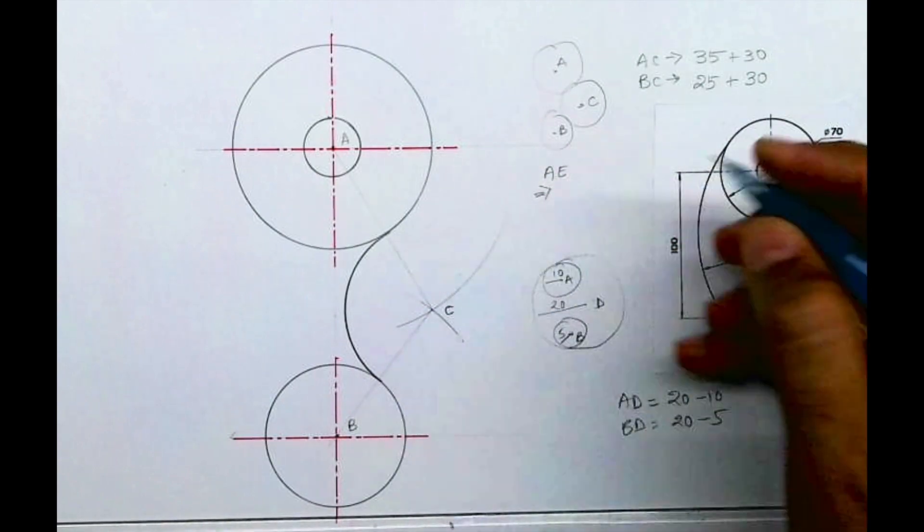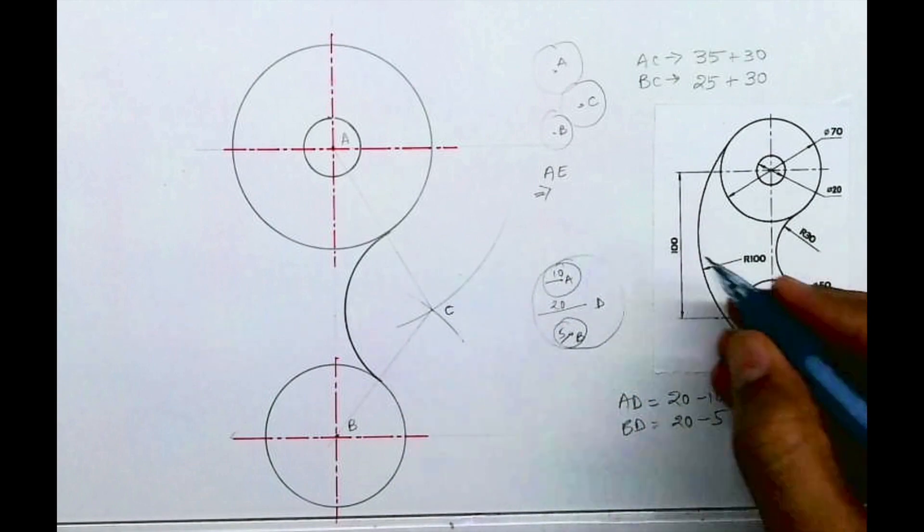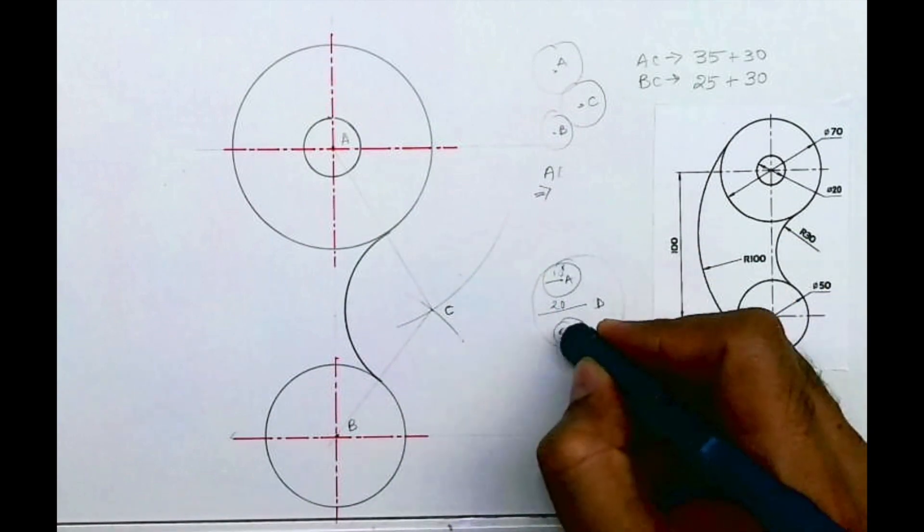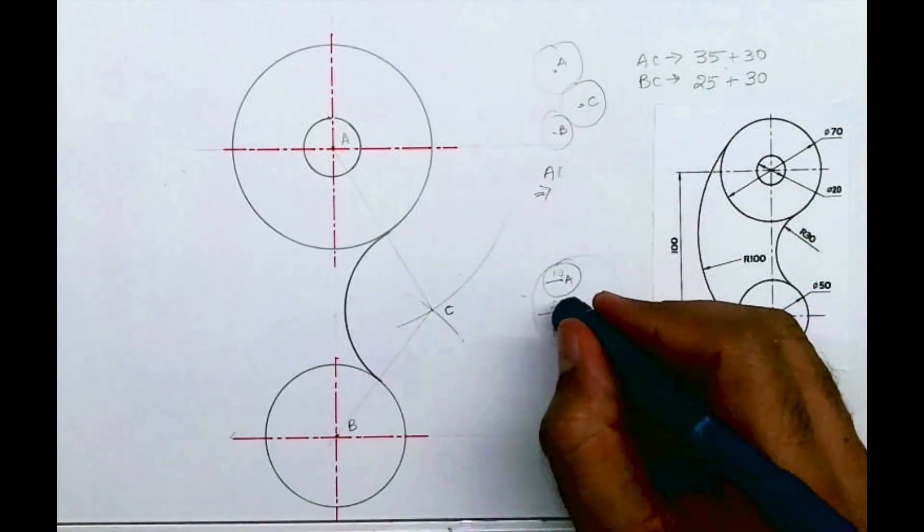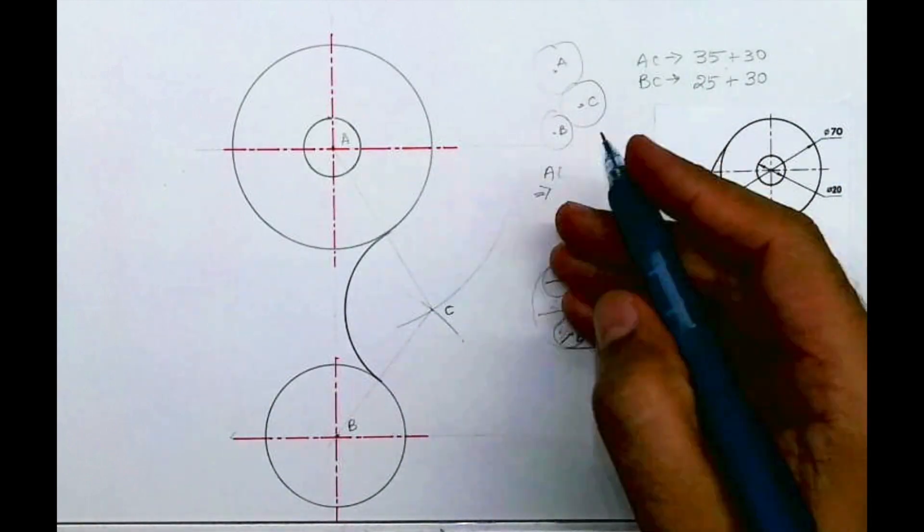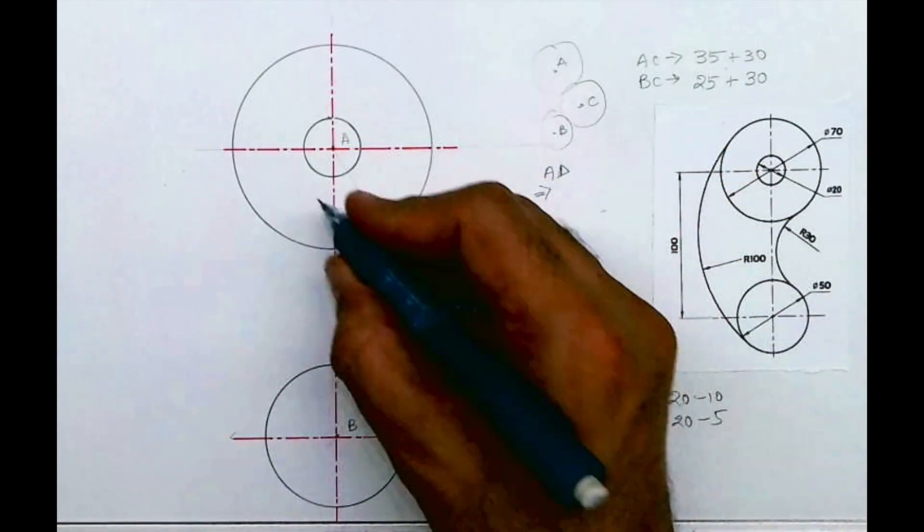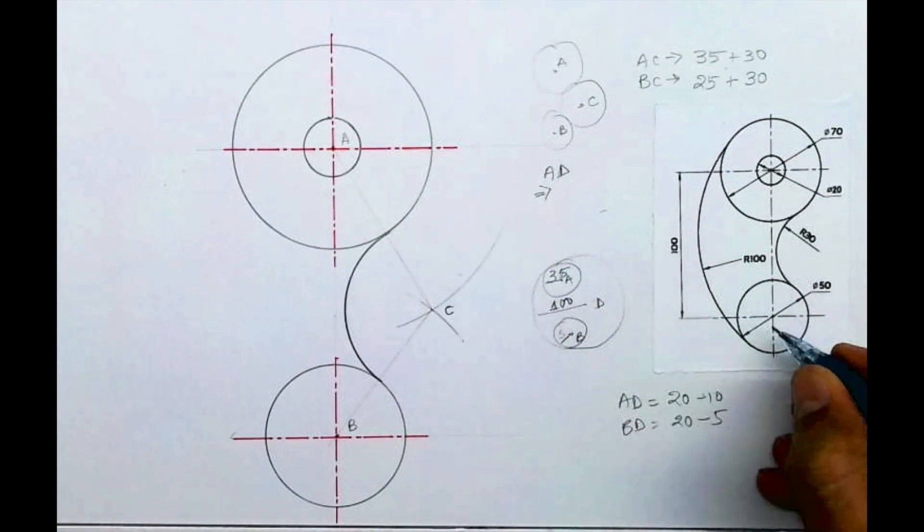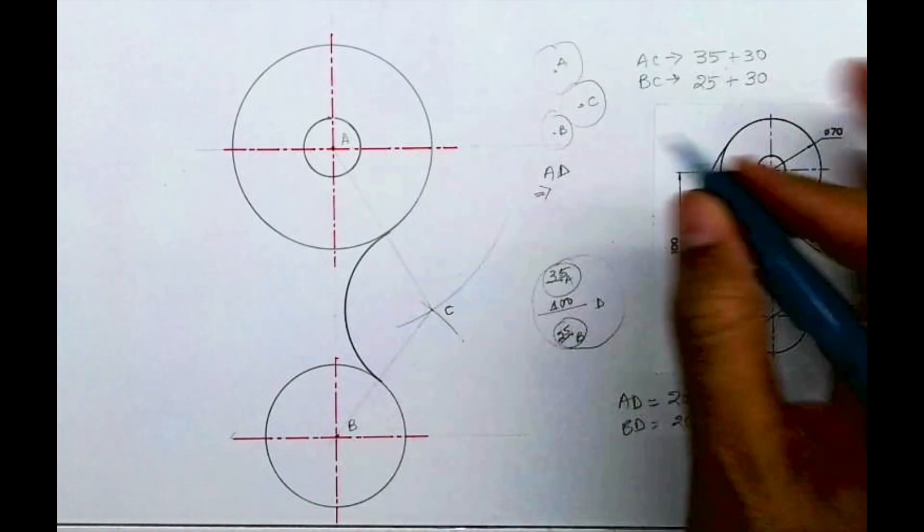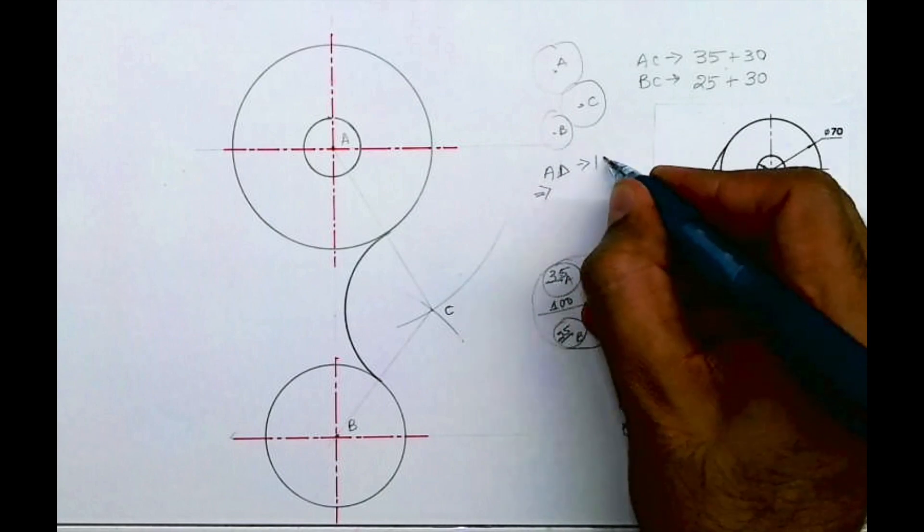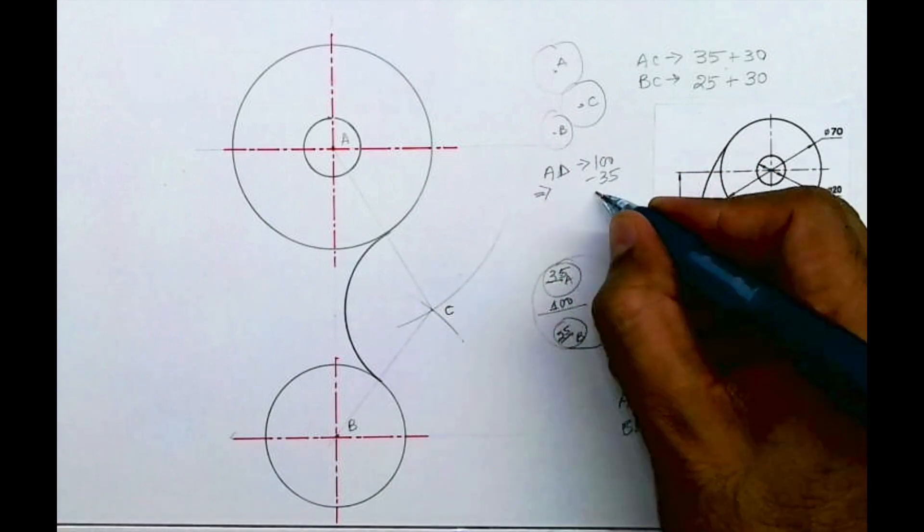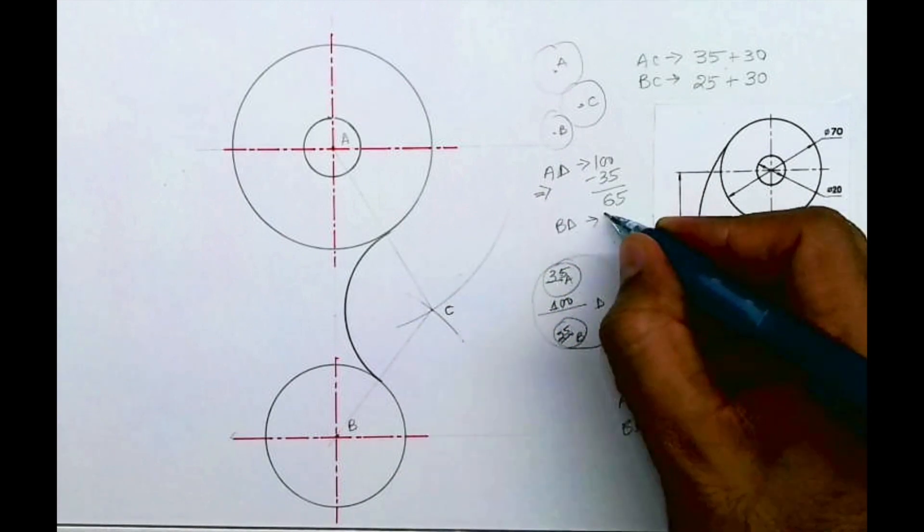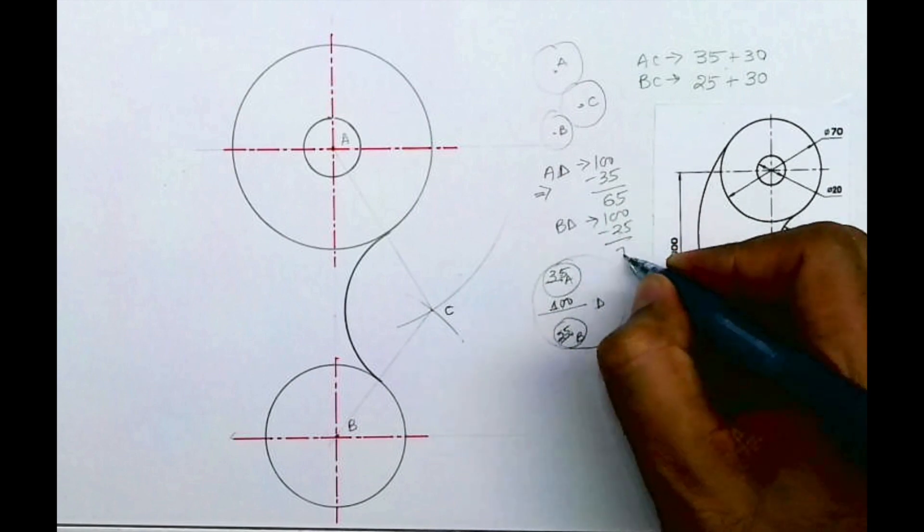A to D in our case: 100 is the bigger radius. This radius is 35, this is 100, and this is 25. So A to D would be 100 minus 35, that is 65. And B to D would be 100 minus 25, that is 75.